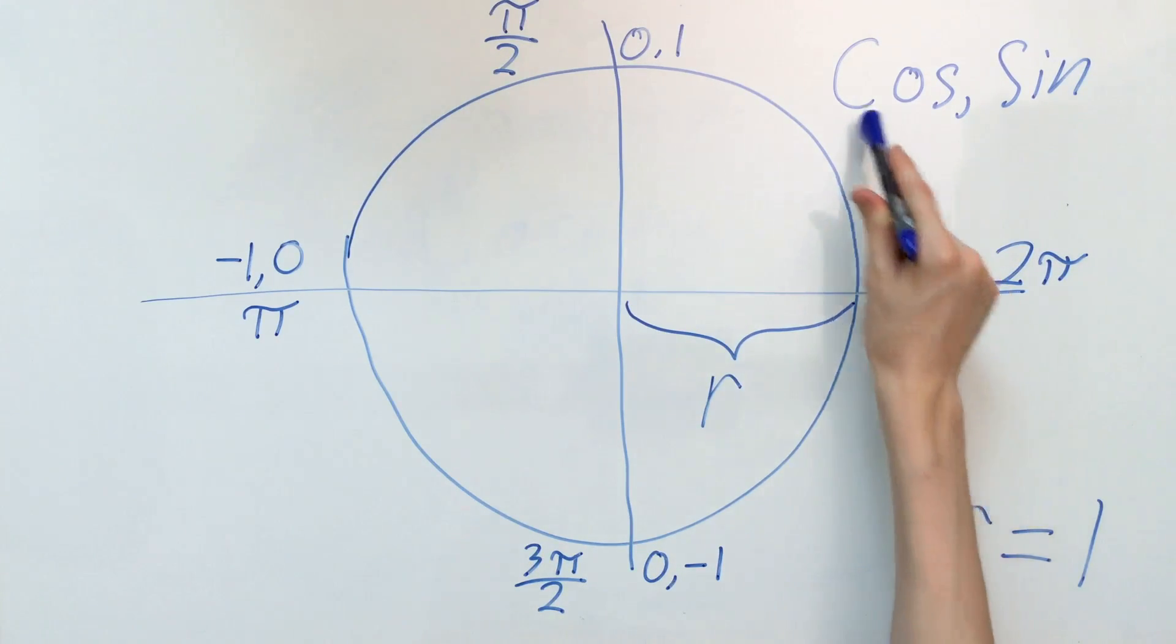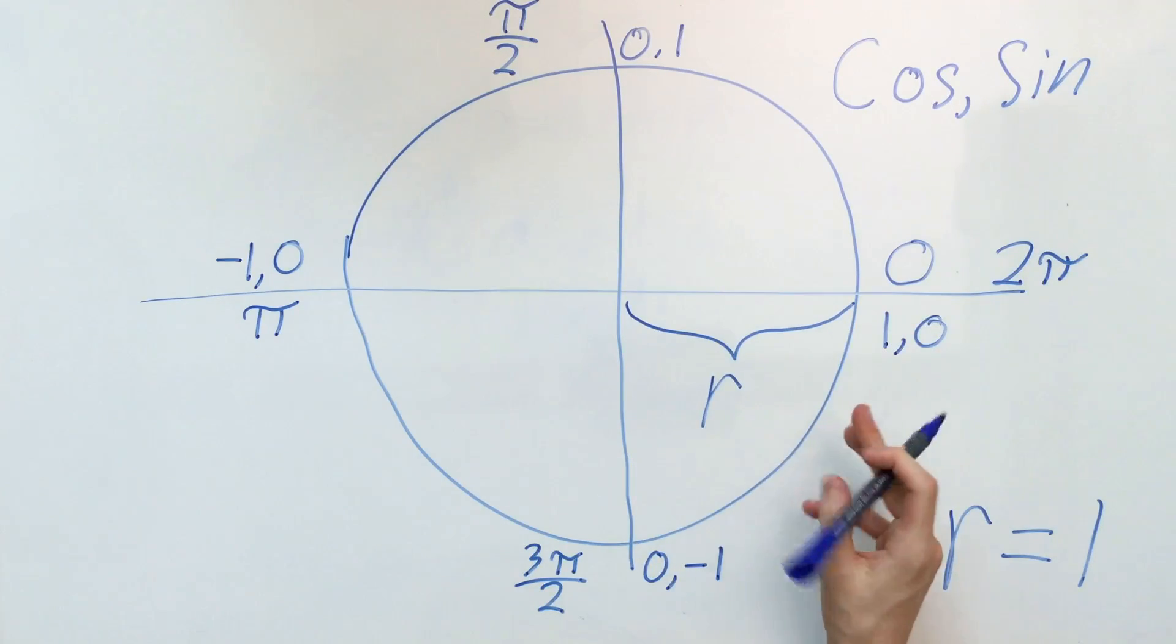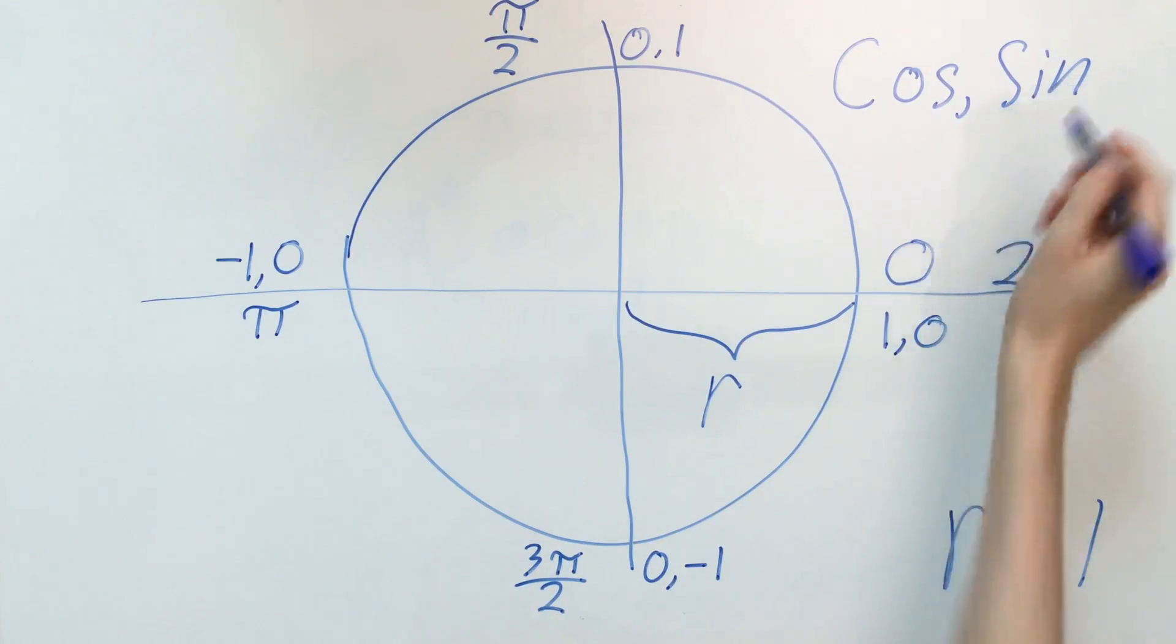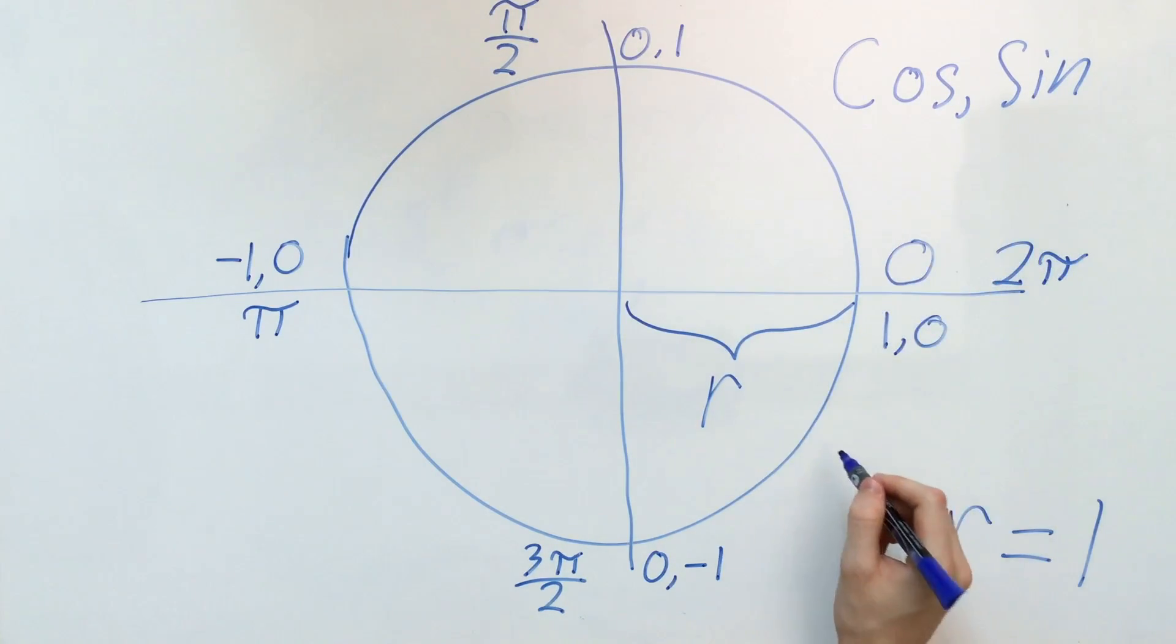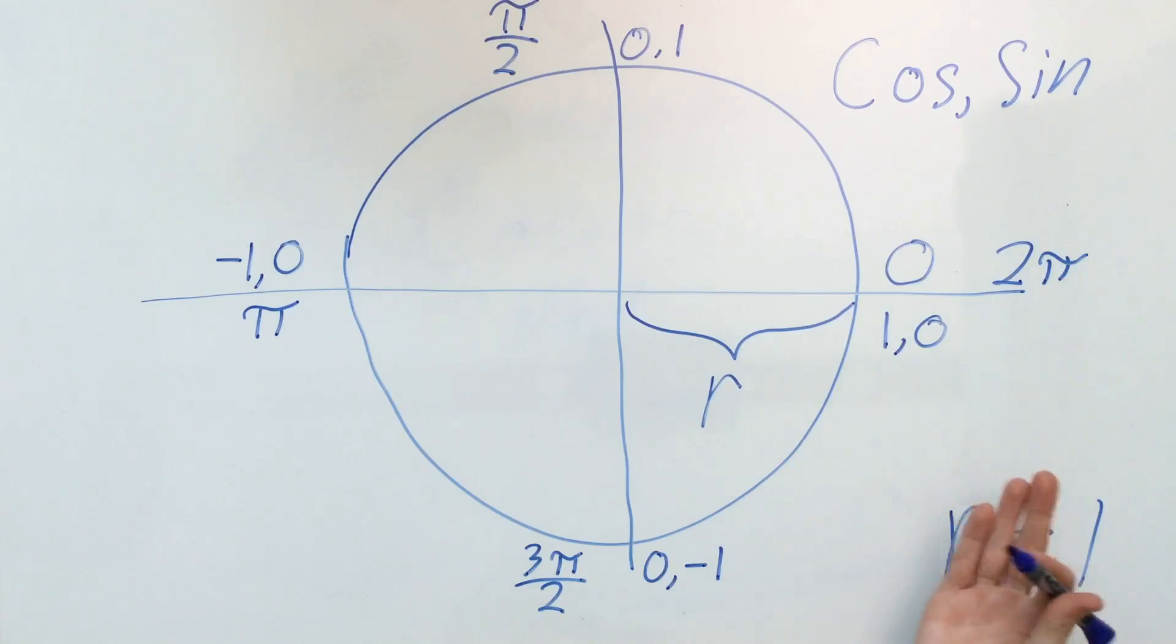If you punched cos and then passed in zero into a calculator, what you would get is 1. If you punched in sin and then zero, you would get zero. And so that's actually the exact same case for all of these different coordinate pairs going around this entire circle. And I've just highlighted a couple of important ones for you to easily remember.